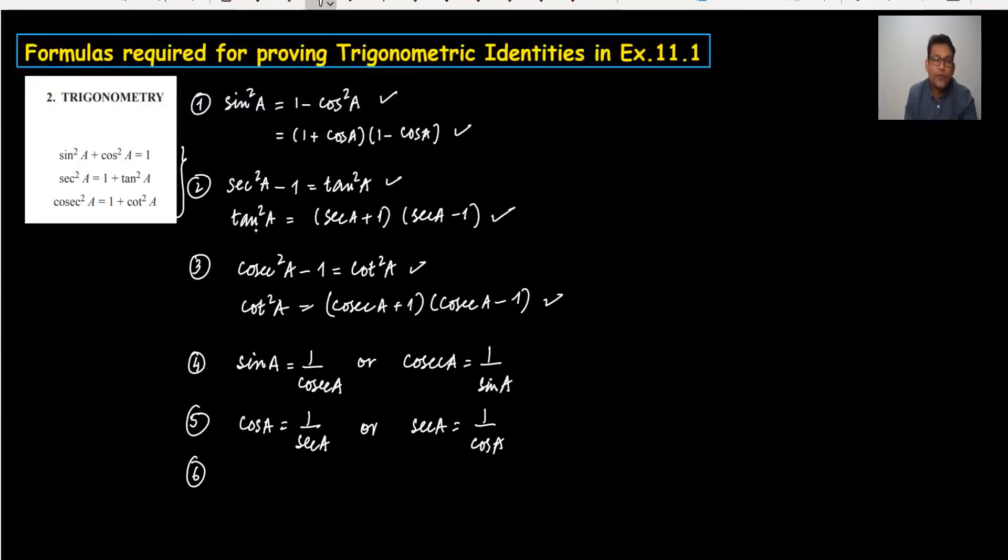Sixth one, you can write tan a equals 1 upon cot a, or you can write cot a equals 1 upon tan a.